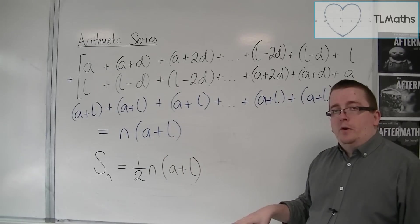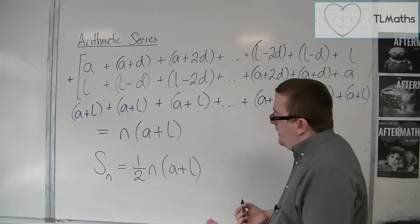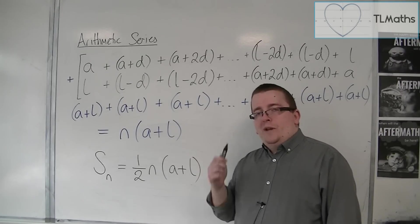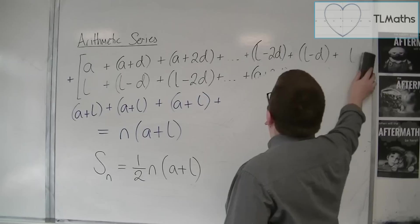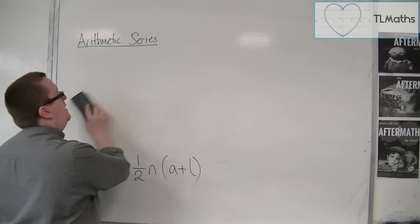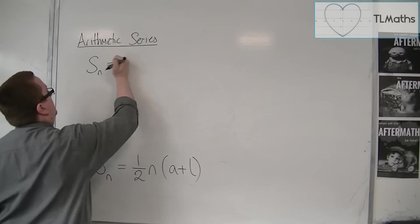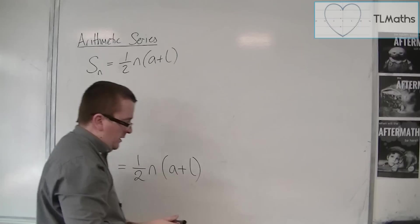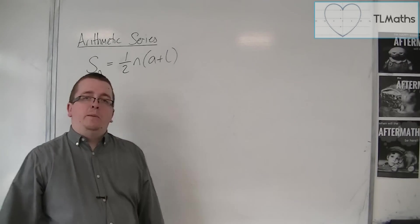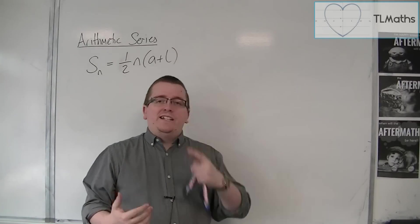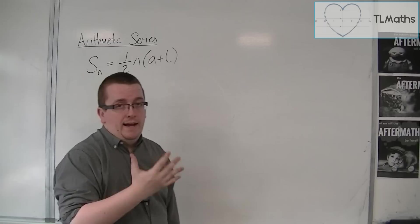Now that is given to you in the formula booklet, and it is very useful, but it has one major drawback. That is that we have to know what L is. We have to know what the last term is in order to use it. So it has this drawback that we can actually get around because we can modify this formula. I'll rewrite it up here. We're going to modify one-half n times a plus L so that it is more useful. Because really, it would be nice to be able to write this formula in terms of a and d. If I have a series, I can easily identify what the first term is and what the common difference is.